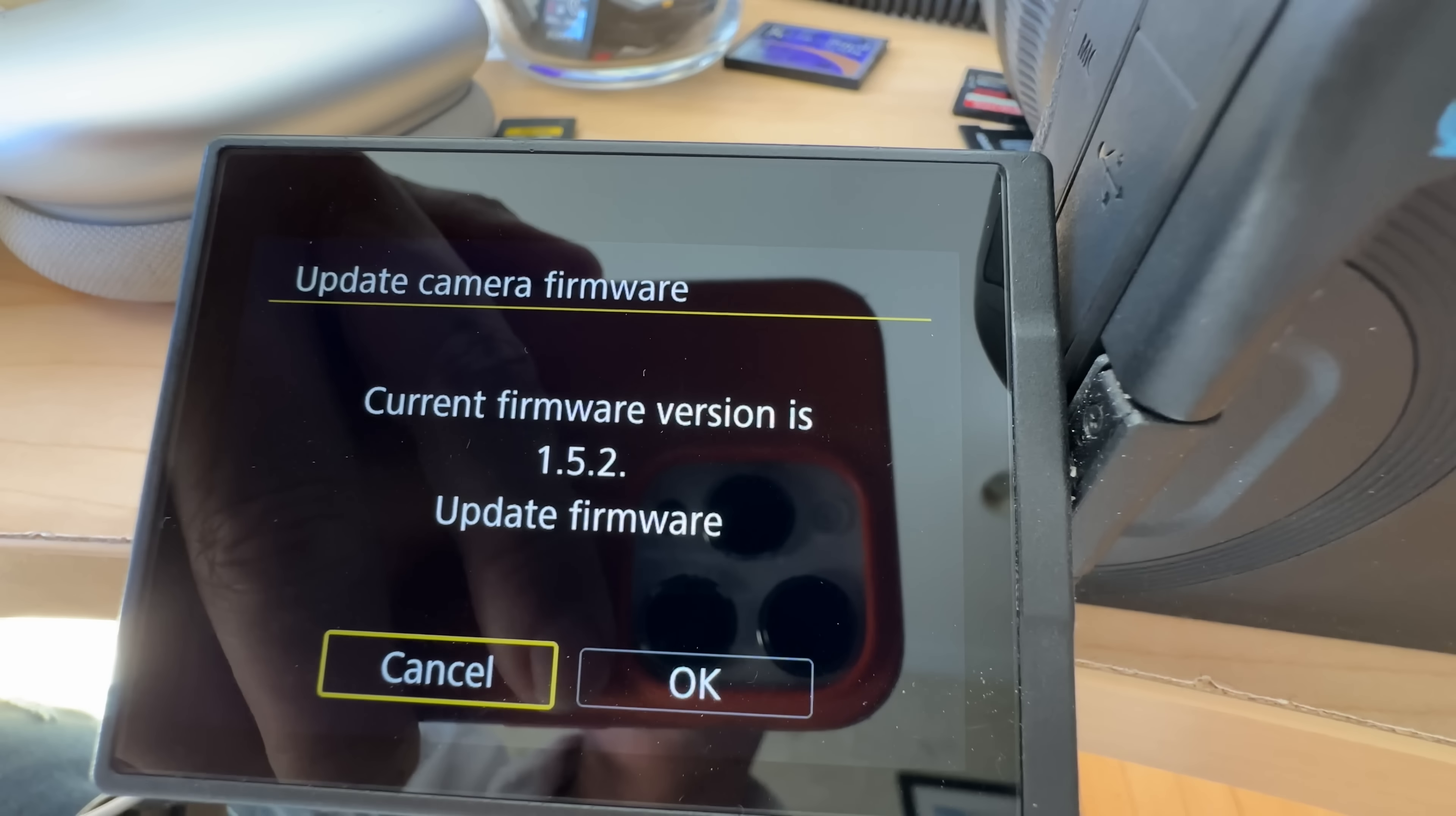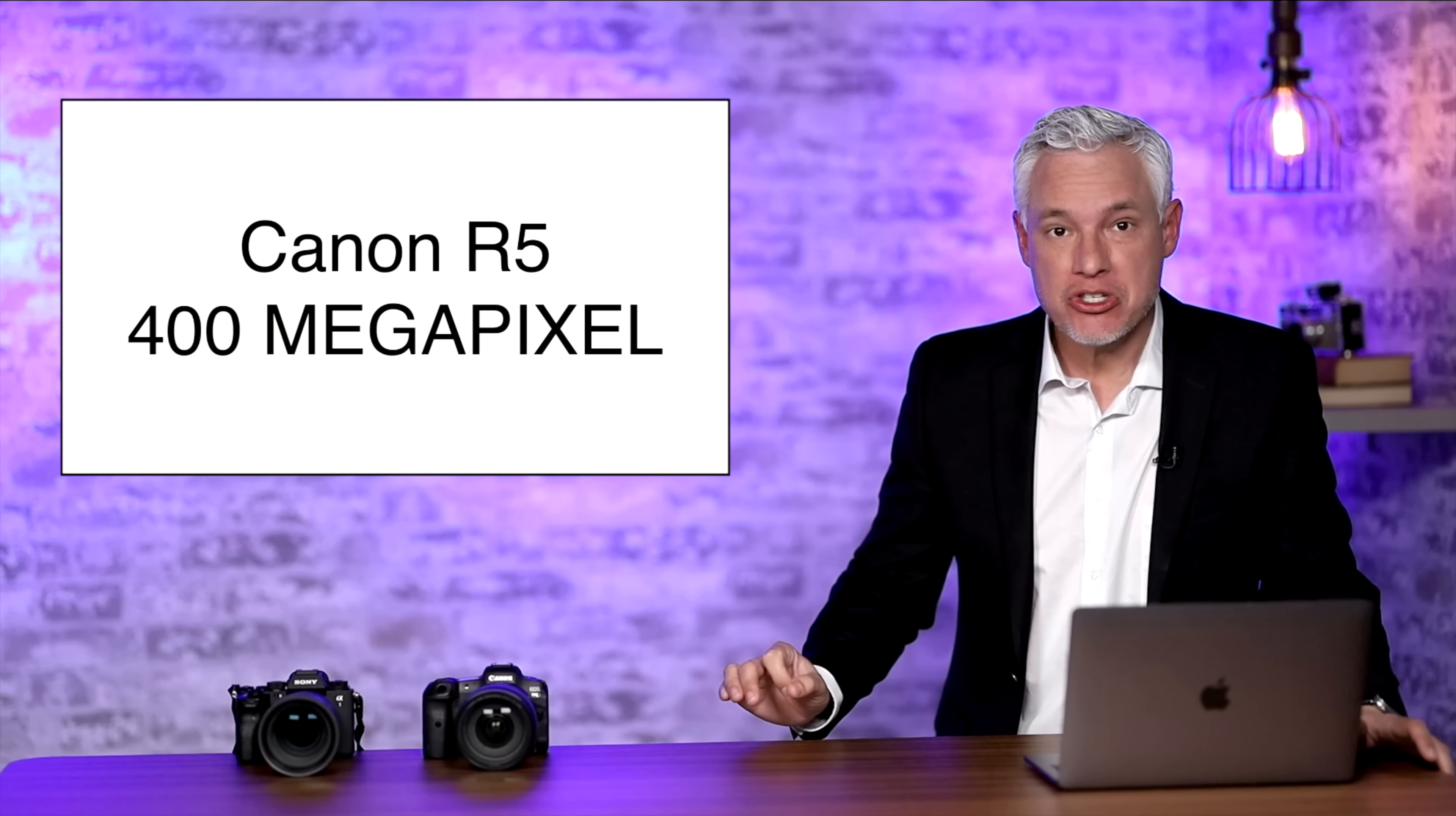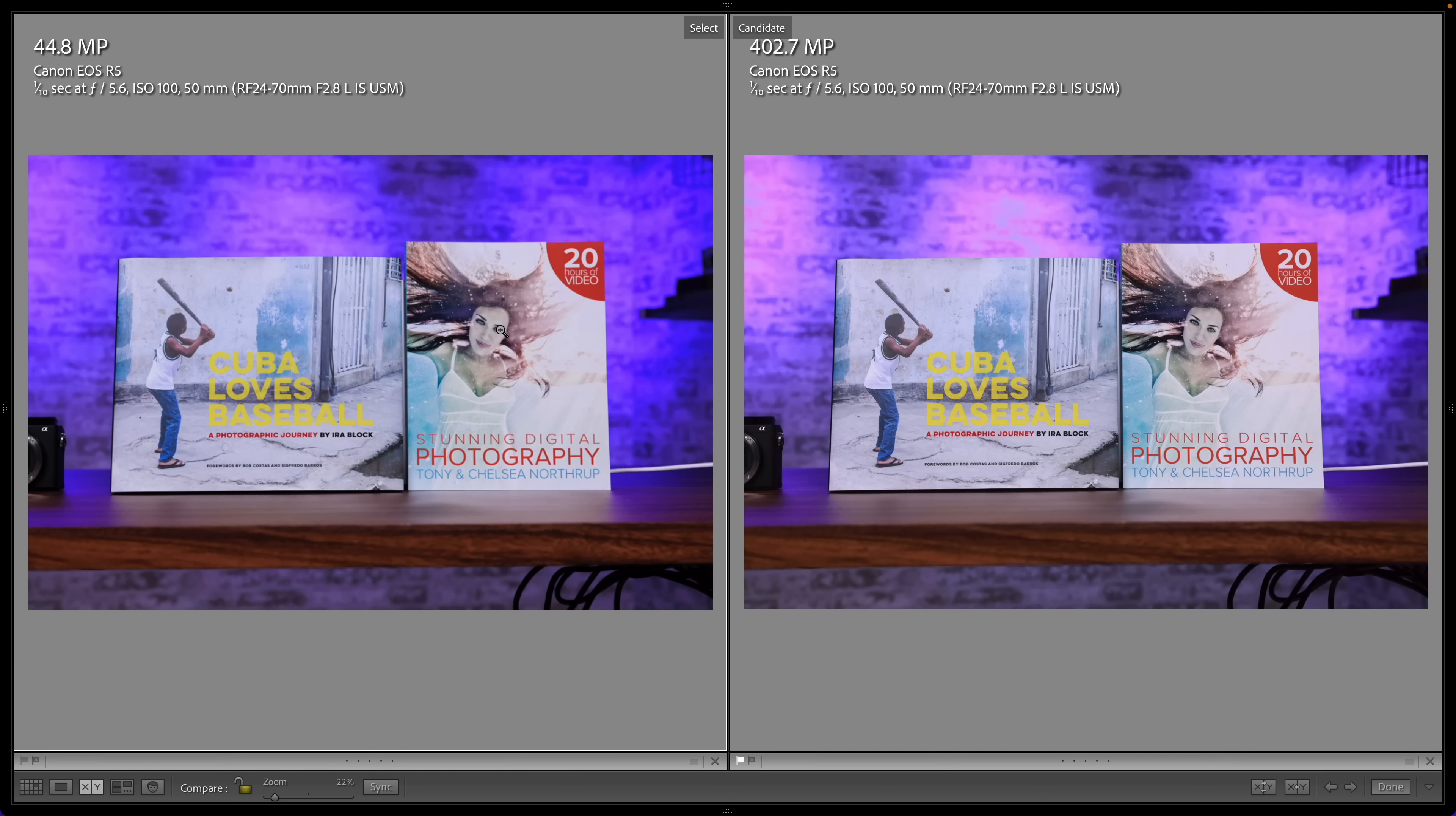Breaking news! Canon launches a direct assault on Sony, releasing a free firmware update for the aging Canon R5 that gives it 400 megapixel images and we tested it.